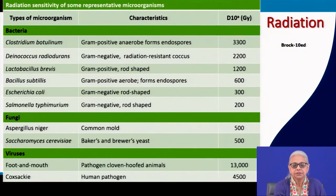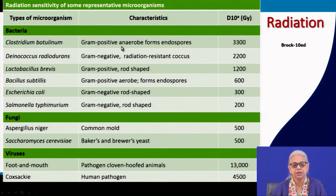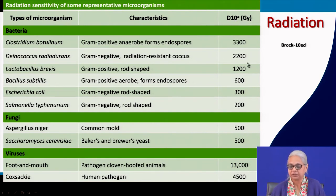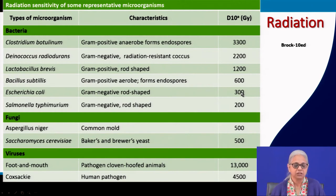Let us look at the sensitivity of certain microorganisms to radiation. We have bacteria, fungi and viruses. Several types of bacteria — both gram positive, gram negative, aerobes, anaerobes — all have the ability to withstand fair amounts of radiation. D10 is the decimal reduction dose: the number of grays required for 1 log reduction in the population. Endospores are much more resistant compared to vegetative cells.